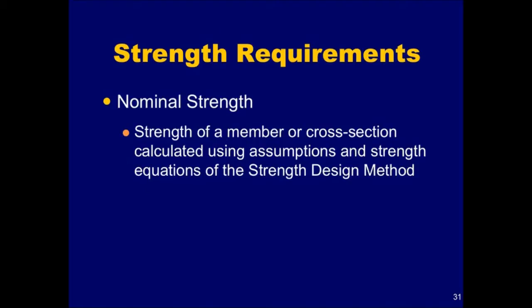The nominal strength of a member, or cross-section, is calculated using the assumptions and strength equations of the strength design method before the application of any strength reduction factors. We will be presenting the nominal strength equations for flexure, shear, and torsion in the upcoming sections of this module.